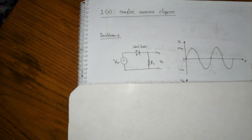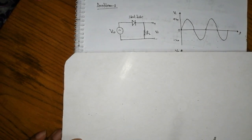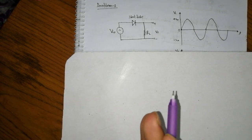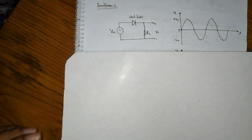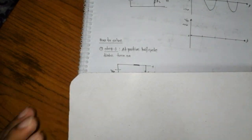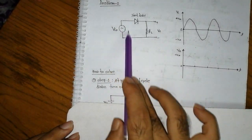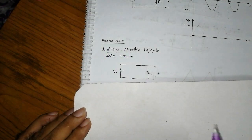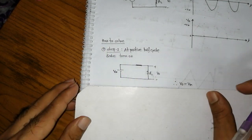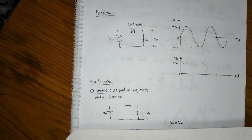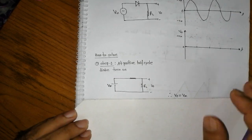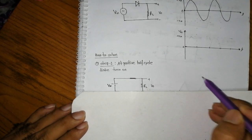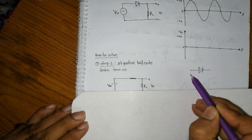Now, for the calculation of the signal, the first step is to analyze the input signal. The input signal has two factors: a positive half cycle and a negative half cycle. In the positive half cycle, the diode is in a forward condition — it acts as a short circuit.